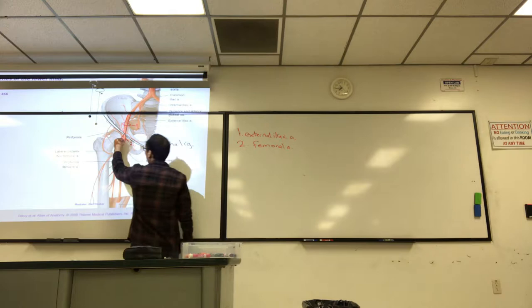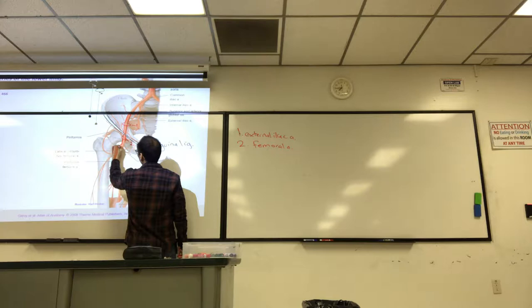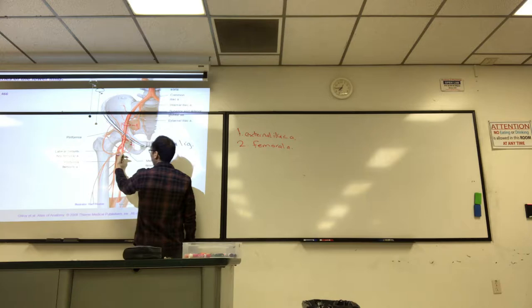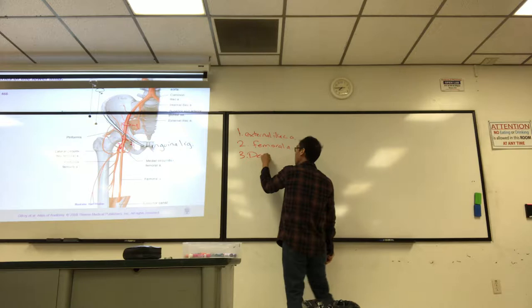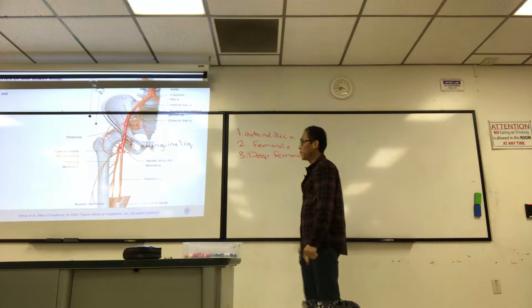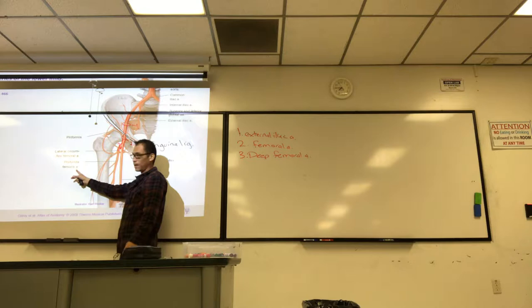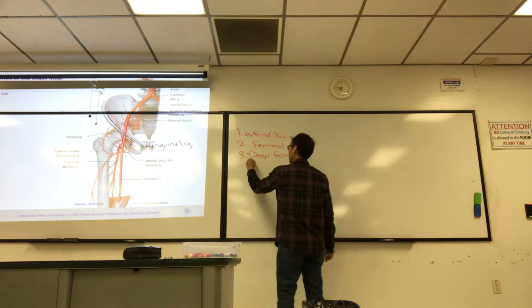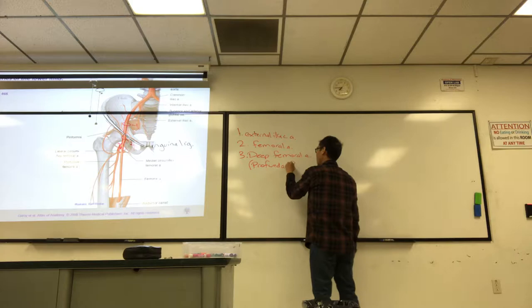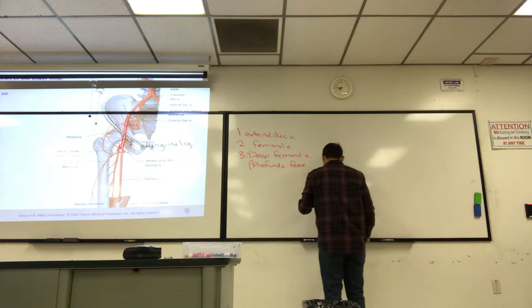The artery doesn't change, just the name. The external iliac continues on as the femoral artery. The first branch I want you to know is this big branch coming off — that's the deep femoral. To be profound is to be deep, so the artery is also known as profunda femoris. It's the same name. Profound means deep.